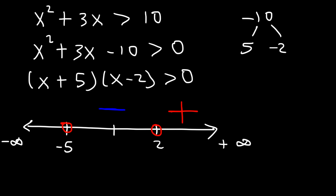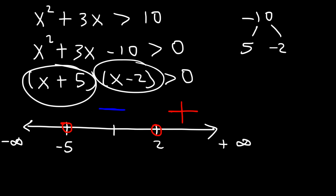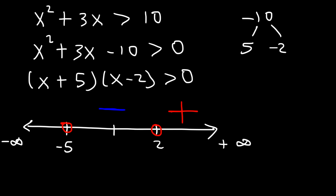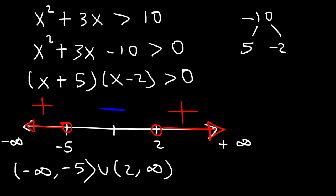So it's negative in that middle region. Now let's try negative 6 for the leftmost region. Negative 6 plus 5 is negative, and negative 6 minus 2 is also negative. Multiplying two negative numbers gives a positive number. Since we want the expression greater than 0, we want the regions on the left and the right. In interval notation the answer is negative infinity to negative 5, not including negative 5, union 2 to infinity. As an inequality: x is greater than 2 or x is less than negative 5.